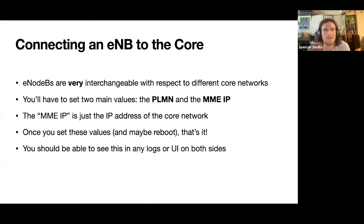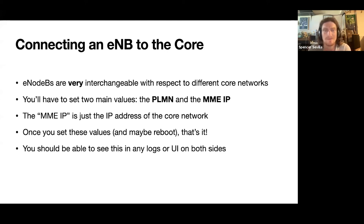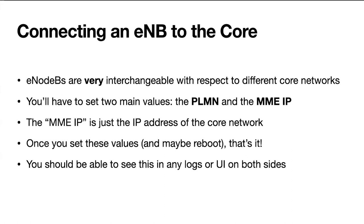For eNodeBs, both on the radio side and on the core side, they're pretty interchangeable. When you're configuring your eNodeB — you got it out of the box, you're super excited — you're going to have to set two main things: the PLMN, which will be a field somewhere, and the IP address of the MME. The MME is a specific component in the EPC — don't worry about it, just know that the IP address of the core is what you're pointing the eNodeB to. Once you set these values, you might also do some basic network configuration like fixed or DHCP IP address. Set these two main LTE values, reboot it, it should come online, and you can check the logs to make sure it's attached before you start working with users and SIM cards.